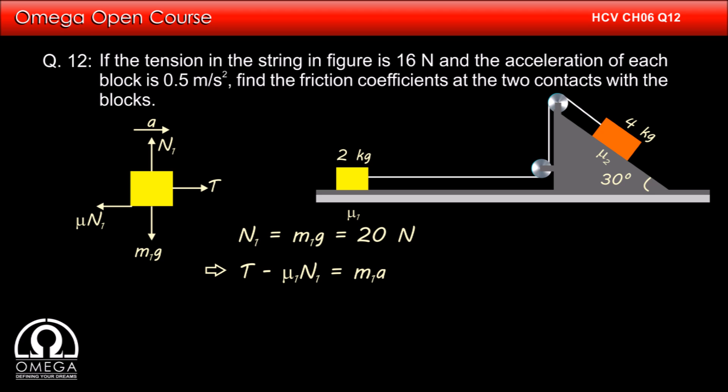Now the net force towards right must be equal to the mass into acceleration of the block. Therefore T minus μ₁N₁ must be equal to MA.